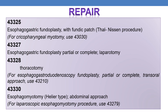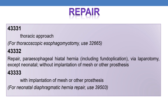CPT 43327 is esophagogastric fundoplasty, partial or complete, via laparotomy. If esophagogastric fundoplasty, partial or complete, is done with thoracotomy, the CPT is 43328. For esophagogastroduodenoscopy fundoplasty, partial or complete, transoral approach, use 43210. CPT 43330 is esophagomyotomy, abdominal approach. For laparoscopic esophagomyotomy, use 43279. CPT 43331 is esophagomyotomy, thoracic approach. For thoracoscopic esophagomyotomy, use 32665.